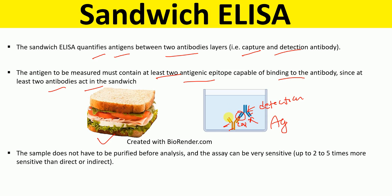The advantage of Sandwich ELISA over other ELISAs is that the sample does not need to be purified before analysis. Another advantage is that the assay can be very sensitive and robust because we use two antibodies — the capture antibody and the detection antibody — which increases sensitivity as well as robustness. Sandwich ELISA is up to two to five times more sensitive than direct or indirect ELISA.